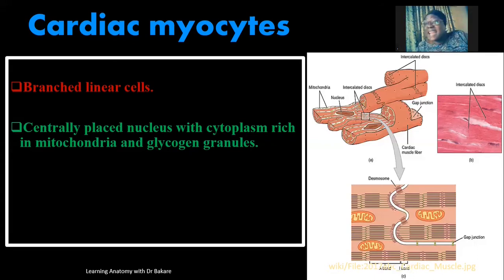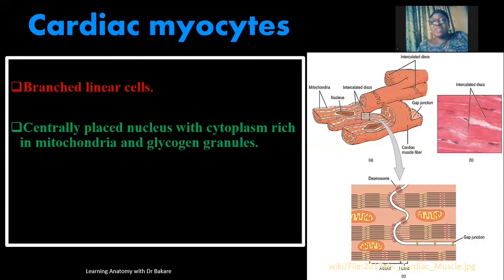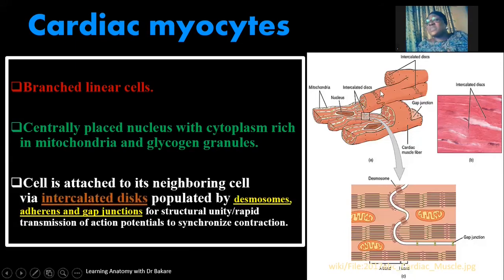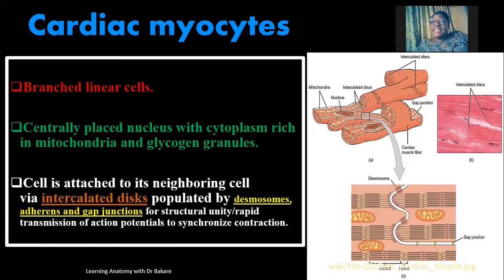Glycogen granules are also seen in large amounts within the cytoplasm, to augment and support the availability of energy for the heart muscle to contract and relax. The cardiac myocytes are elongated and branched, and they connect with one another via intercalated discs.